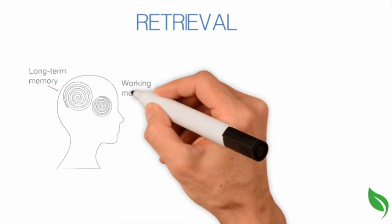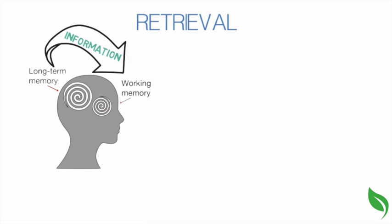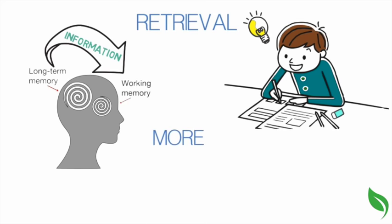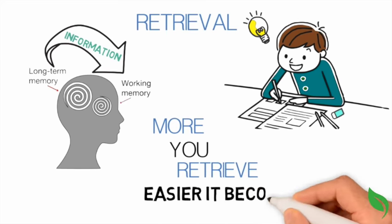Retrieval. Taking information out of long-term memory and into our conscious working memory so we can change our behavior. Retrieval gets easier when you practice. The more you retrieve something from long-term memory, the easier it becomes.